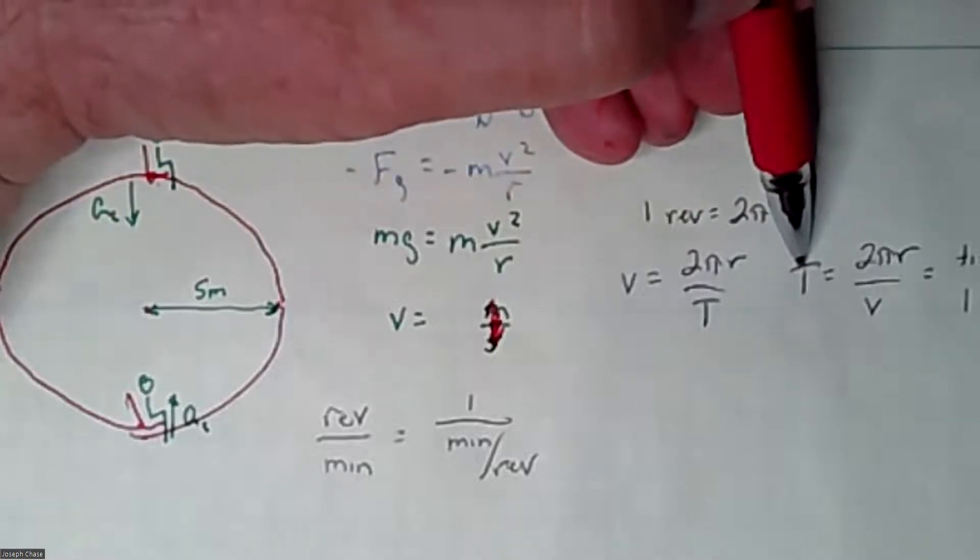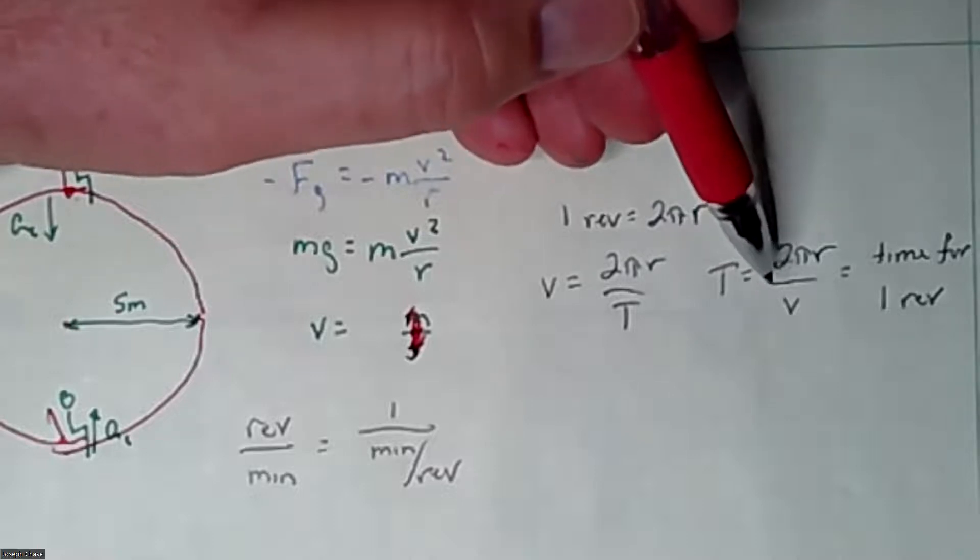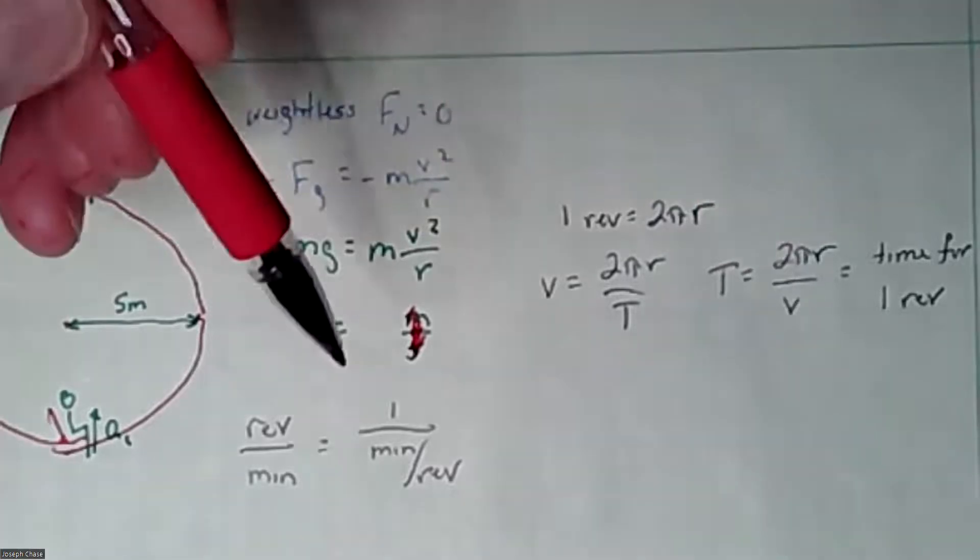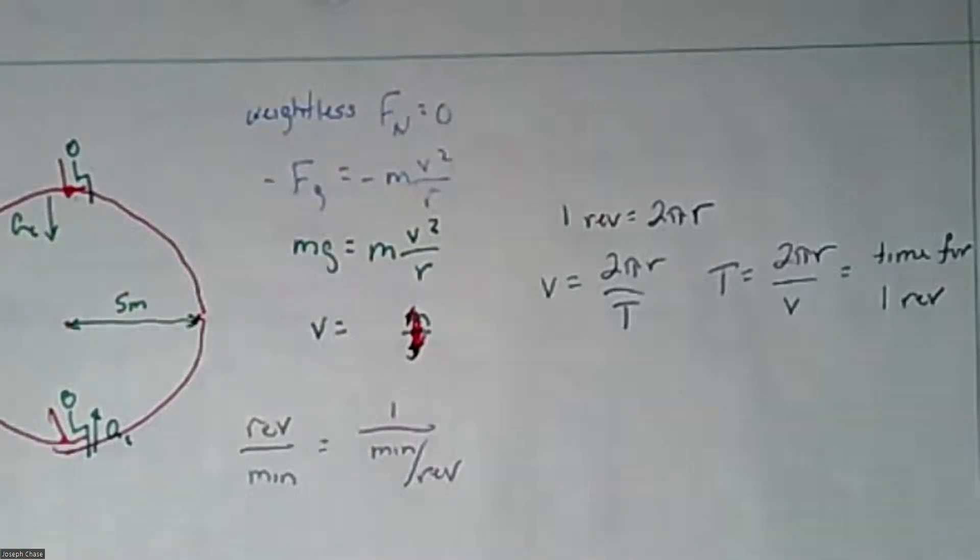Then you can solve for T, which is a time for one revolution in seconds, and then convert that to minutes. And that's going to be minutes per revolution. So hope that helps you there.